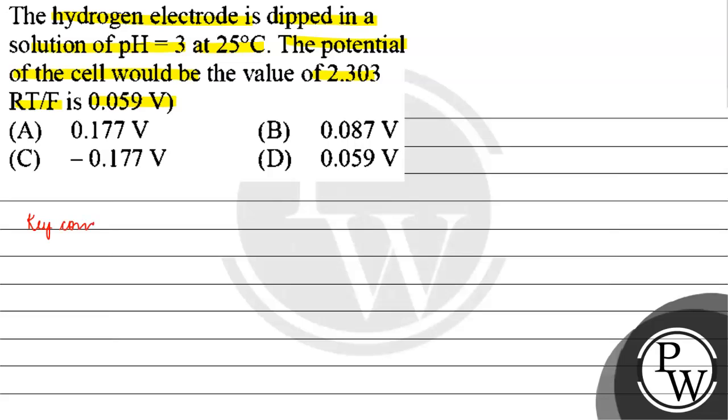The key concept for this question is Nernst equation. If we talk about Nernst equation, what is it? It is E cell equals E naught cell minus 2.303RT by NF log base 10, concentration of the products by the concentration of the reactants.